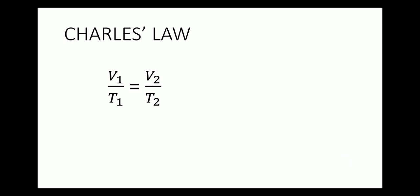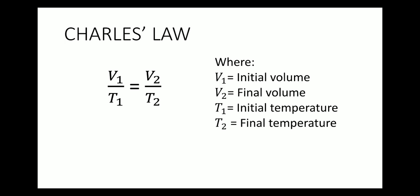The formula for Charles' Law is V1 over T1 is equal to V2 over T2, where V1 is the initial volume, V2 is the final volume, T1 is the initial temperature, and T2 is the final temperature.